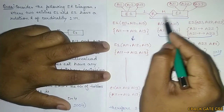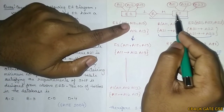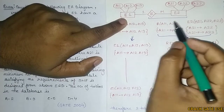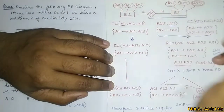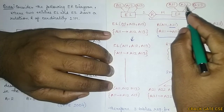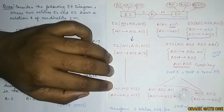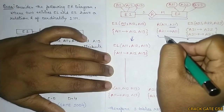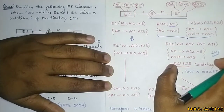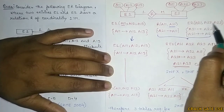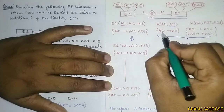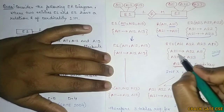For R, we consider the keys of both tables, A11 and A21. The key comes from the many side because every record of E2 is related to only one record of E1, meaning all values of A21 are unique in R. So A21 is the key. In E2, A21 defines A22 and A23. When we merge R and E2 into one table, the attributes are A21, A22, A23, and A11 as a foreign attribute.